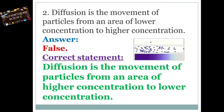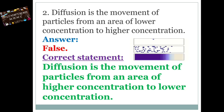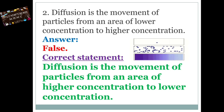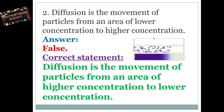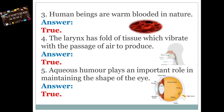Second one: diffusion is the movement of particles from an area of lower concentration to higher concentration — False. Correct statement: diffusion is the movement of particles from an area of higher concentration to lower concentration. Third one: human beings are warm-blooded in nature — True.